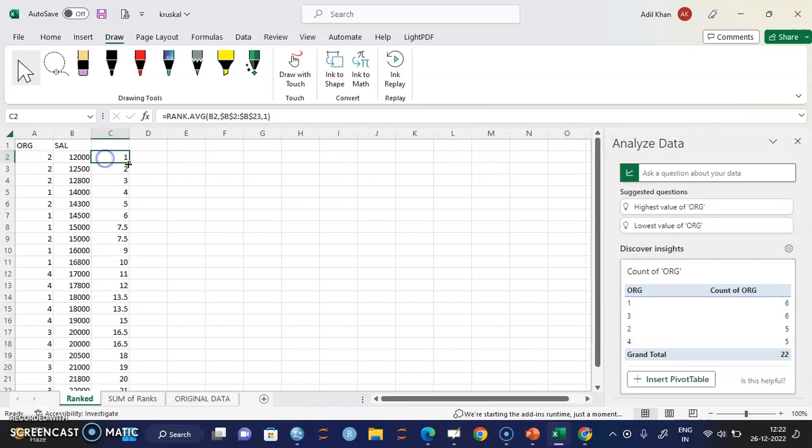So what we have done, we have given rank to the lowest number and then increasing two, three, four, five, six. Here we have seen that these two numbers are same, 15,000, 15,000. The rank should be seven and eight.